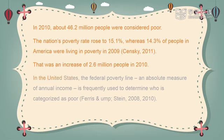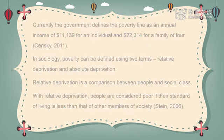In the United States, the Federal Poverty Line, an absolute measure of annual income, is frequently used to determine who is categorized as poor (Ferris and Stein, 2008, 2010). Currently, the government defines the poverty line as an annual income of $11,139 for an individual and $22,314 for a family of four (Senski, 2011).